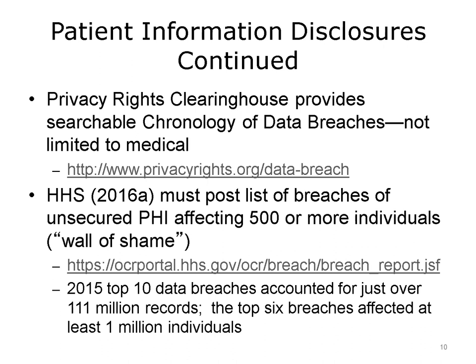Two websites are devoted to documentation of disclosures. The Privacy Rights Clearinghouse provides a searchable chronology of data breaches at www.privacyrights.org/data-breach. The Department of Health and Human Services, HHS, is required under the HITECH Act to post a list of breaches of unsecured PHI affecting 500 or more individuals, accessible at ocrportal.hhs.gov/ocr/breach/breach_report.jsf.